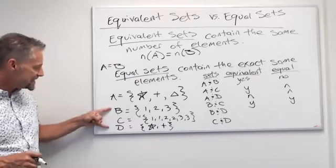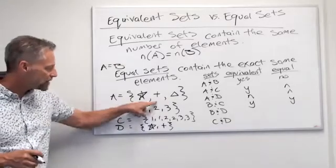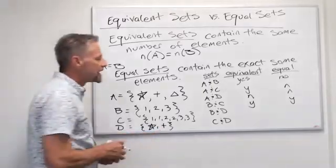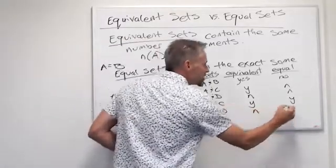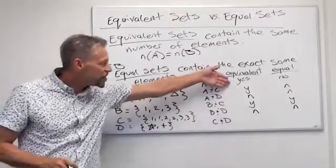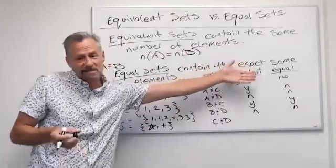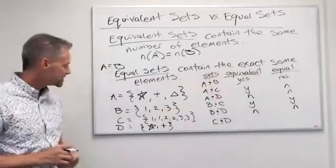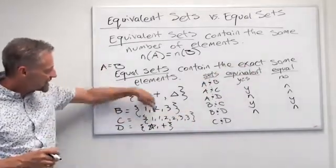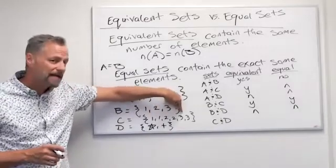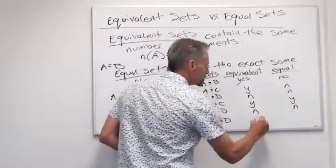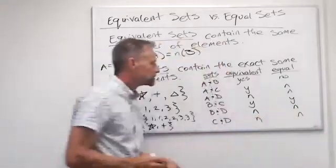Let's look at B and D. Again, there are three elements in B and just two elements in D, so they're not equivalent. Notice: if anything's not equivalent, it can't be equal, because equal sets have to be exactly the same set. So that was B and D. What about C and D? Again, there are three unique elements in C and only two in D — not equivalent, not equal.